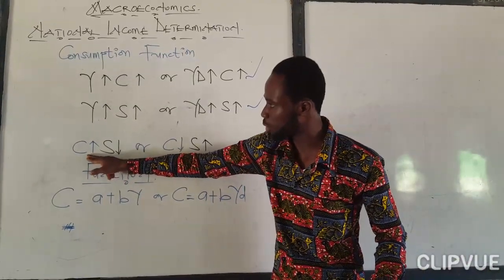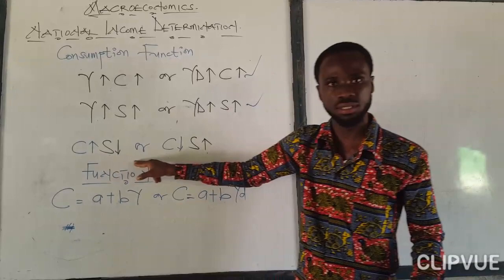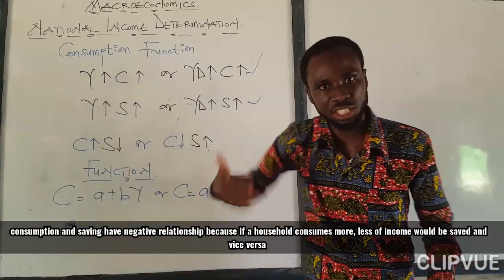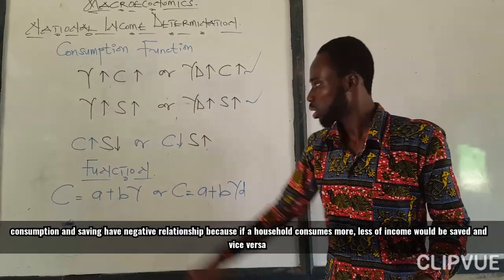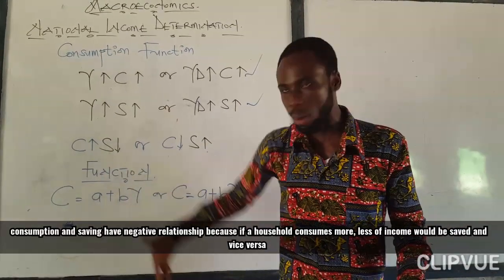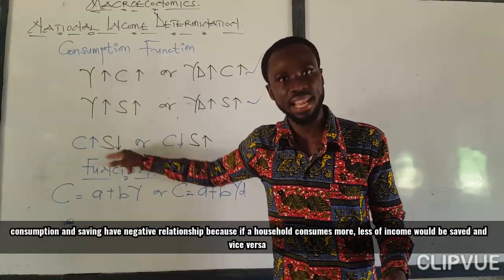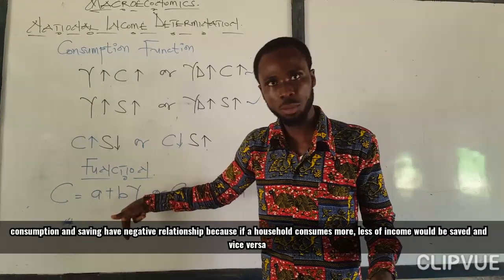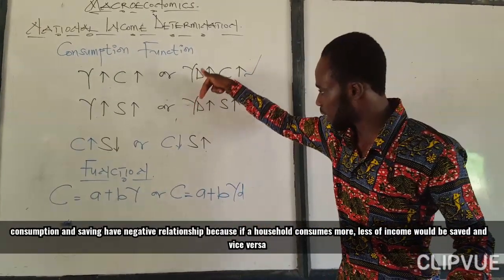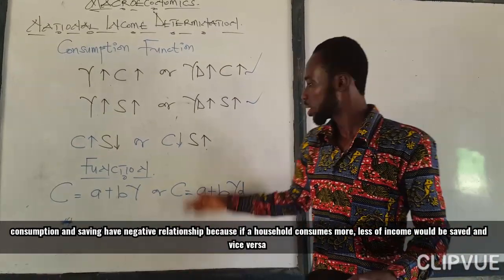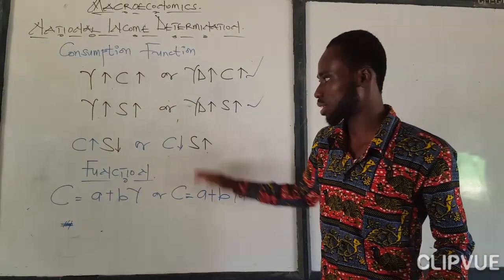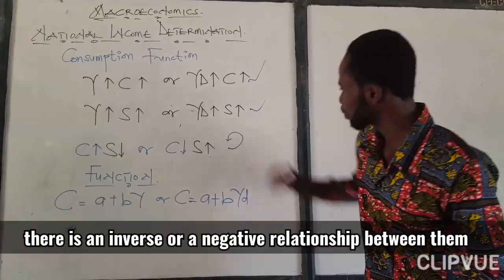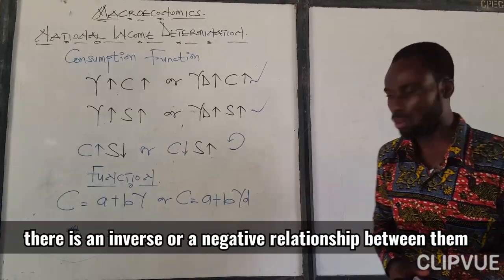When we come to the relationship between consumption and savings: when the household is spending much of their income or disposable income on consumable goods, it means they are going to save less. The more we consume, the lower we save. So there is an inverse relationship between consumption and savings.